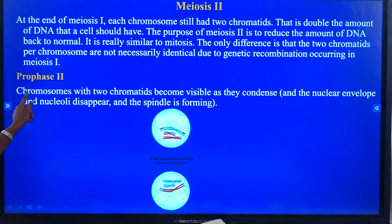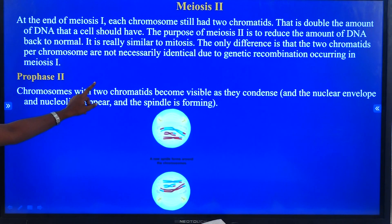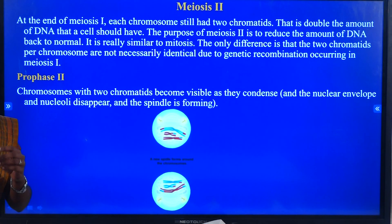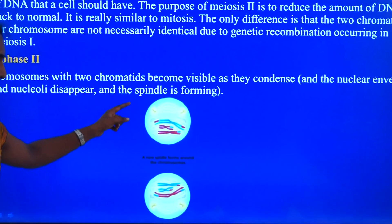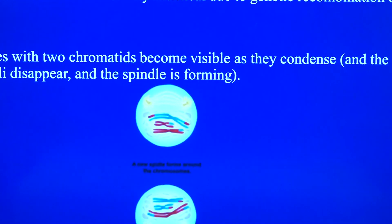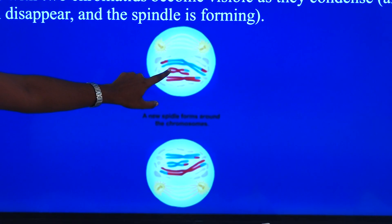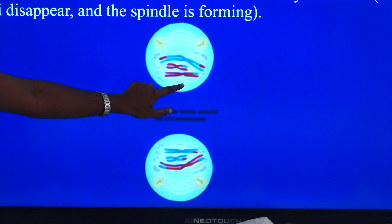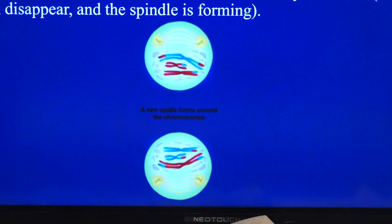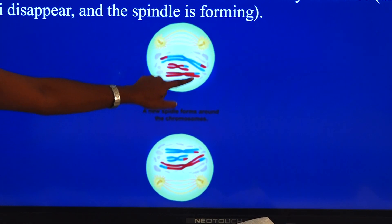The first stage of meiosis II is prophase II. In prophase II, the chromosomes with two chromatids become visible as they condense, chromosome formation occurs again, spindle fibers appear, and the nuclear membrane disappears. You can see in the diagram that chromosomes are marked in red color at the tips, because in meiosis I genetic recombination has occurred in the chromosome, indicating the exchanged segments.